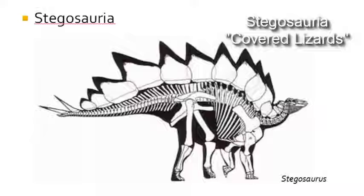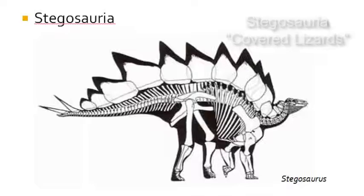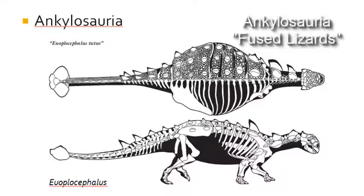The first group are the Armored Dinosaurs, the Thyreophora, which is further divided into two groups: the Stegosauria, the covered lizards, and the Ankylosauria, the fused lizards.